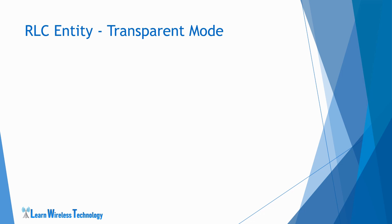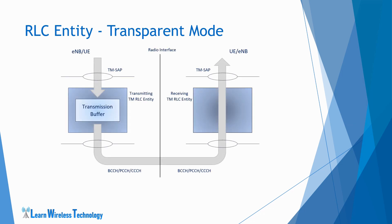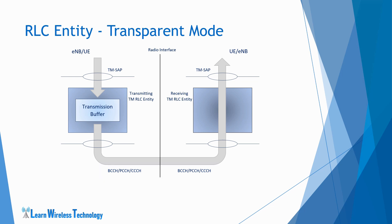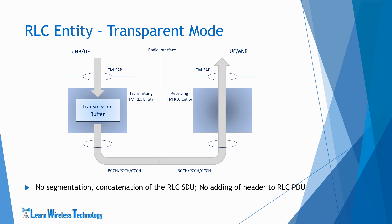Let's describe the transparent mode RLC entity in more detail. This is the transparent mode model showing the peer RLC entities at UE and eNodeB. The transparent mode entity is configured to transmit or receive RLC PDUs through the logical channels, and is generally used for common signaling. Hence it uses the logical channels BCCH, PCCH, and CCCH. At the transmitting entity side, when the RLC SDU is received from the upper layer via the service access point, the entity forms an RLC PDU out of it but does not segment or concatenate the RLC SDU. It does not even include any header in the RLC PDU formed.